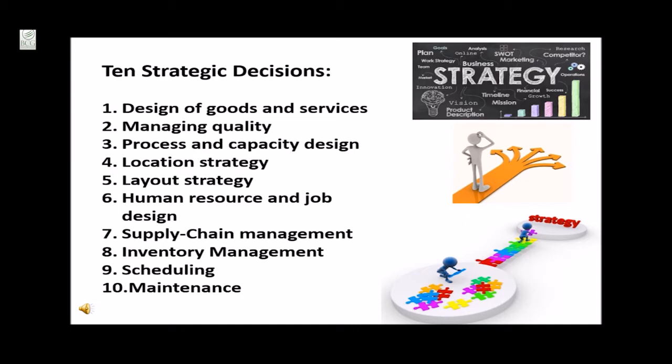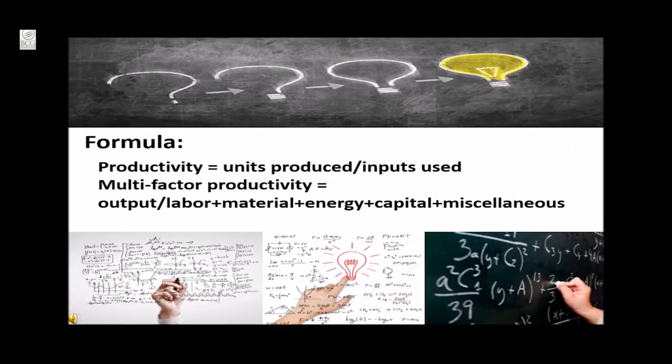The 10 strategic decisions are: first, design of goods and services; second, managing quality; third, process and capacity design; fourth, location strategy; fifth, layout strategy; sixth, human resources and job design; seventh, supply chain management; eighth, inventory management; ninth, scheduling; and lastly, maintenance.